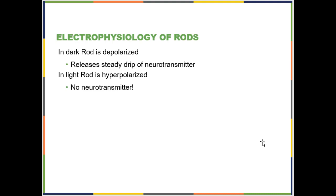The electrophysiology of rods is a bit complicated. The first thing to know is that rods are kind of the opposite of how we generally think of nerves working. In the absence of light — when it is dark — when the rod is not being stimulated, it automatically depolarizes. So it's like auto-rhythmic cells; they are default-depolarized, releasing a steady stream of neurotransmitter.